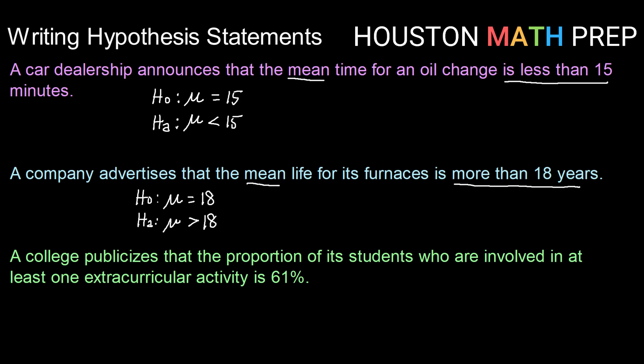And finally, our third example: a college publicizes that the proportion of its students who are involved in at least one extracurricular activity is 61%. So writing a null and alternative hypothesis pair, here we're talking about a population proportion. So our parameter here would be p. And for p in our null hypothesis, we always have to have an equality statement. So p equals 0.61 or 61%.